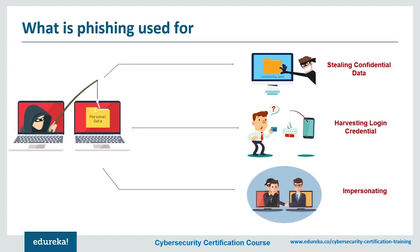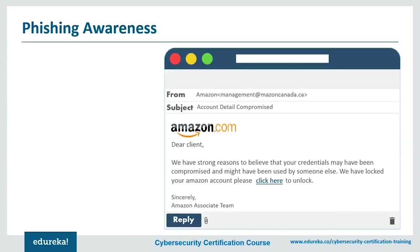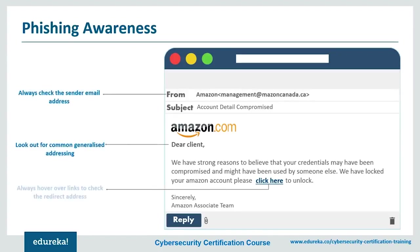To protect against phishing, be aware of how phishing emails work. Identify them by: a generic greeting like 'dear client'; an email address that doesn't match the claimed sender (e.g., labeled 'Amazon' but sent from 'management@maisoncanada.ca'); and redirect links that go to fake sites like www.fakeamazon.com. Always report suspicious emails to your administrators.